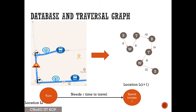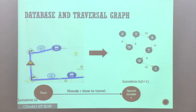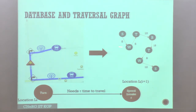We construct a traversal graph, which is nothing but a sequence of landmarks. At a given point in time we identify a landmark — for example, a turn at location l_i — and then after a time interval tau it encounters another landmark, which is a speed breaker at location l_{i+1}. This we get from the ground truth; the annotators label it that way. In this way we construct this traversal graph, which is the collection of landmarks, and complete the training phase.